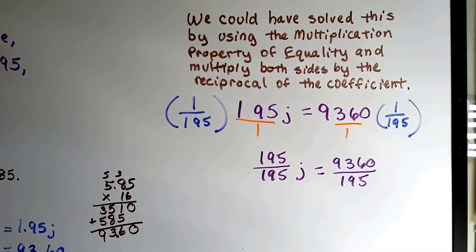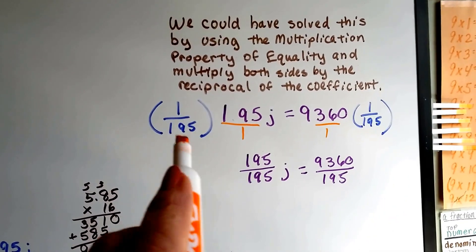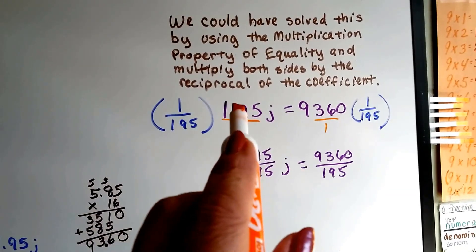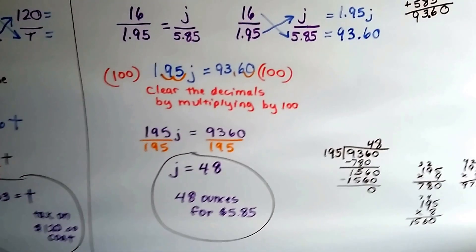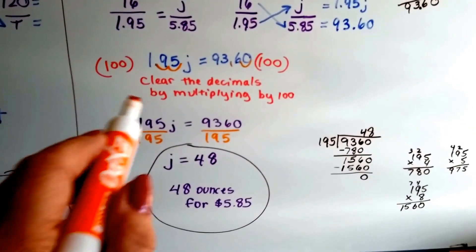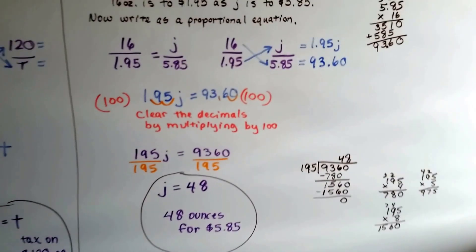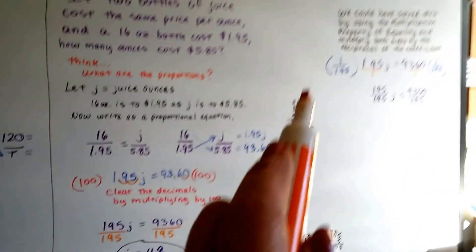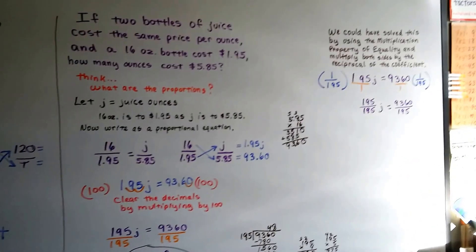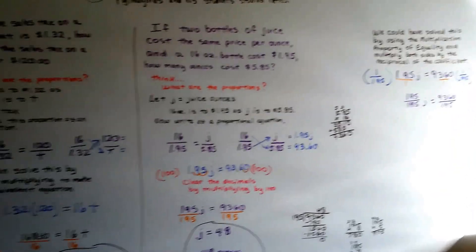So we could have either used this method and multiplied by the reciprocal of this coefficient, 195, or we could have just divided each side by the coefficient. I kind of thought this was quicker. But when we're dealing with fractions, we want to do this for sure because that's helpful, because they're already in fraction form.